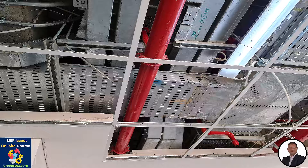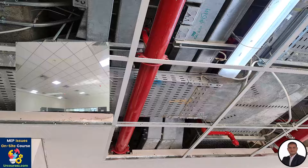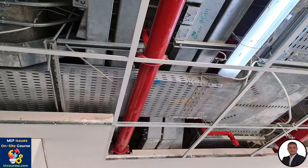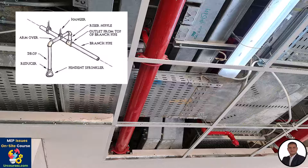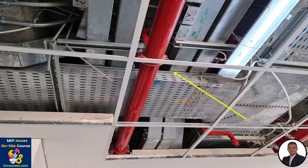As you can see in this photo, this is a false ceiling tile of 60 by 60 centimeters. We have many MEP services above the false ceiling and the space is very congested. We have a black steel firefighting pipe whose branch goes above the cable tray and trunk, which is wrong — we need to avoid any wet services above the electrical services. This is especially problematic here where we have a pipe fitting connecting the arm-over with the dropping pipe for the sprinkler.